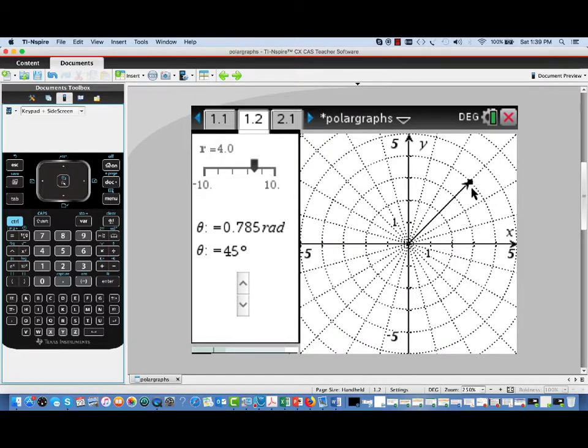Now, here's how it works. We have a point that's driven by those sliders in the other window. Right now, we have a radius of 4 and an angle of 45 degrees, or pi over 4.